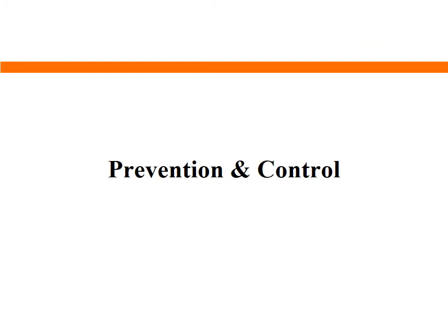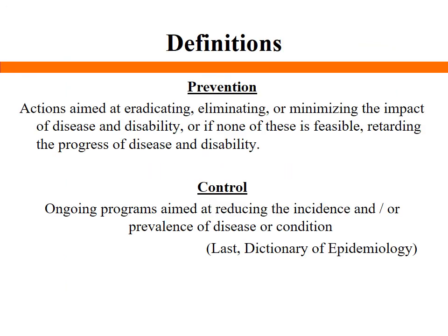Prevention is defined as actions aimed at eradicating, eliminating, or minimizing the impact of disease and disability. Control refers to ongoing programs aimed at reducing the incidence and/or prevalence of a disease or condition. Here we are focusing on road traffic injuries in particular.